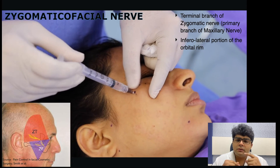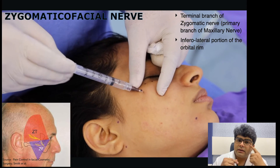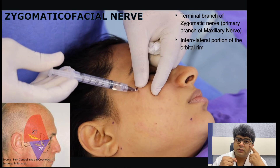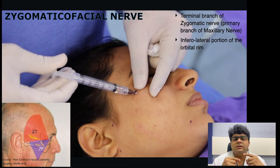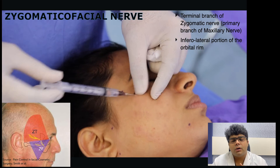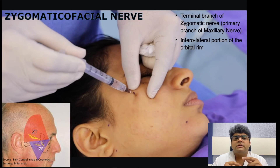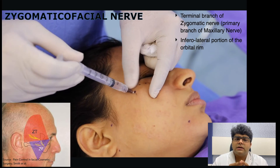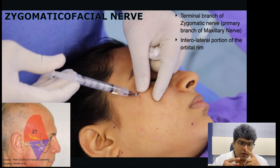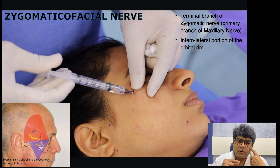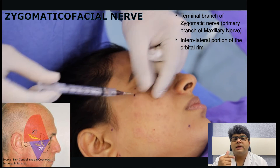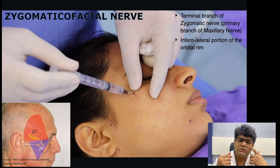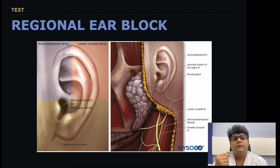The zygomaticofacial nerve covers the triangle in the inferolateral part of the orbital or zygomatic area. It is the terminal branch of the zygomatic nerve, and the inferior lateral portion of the orbital rim is what we anesthetize with this block. It is a very superficial injection.